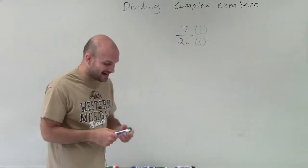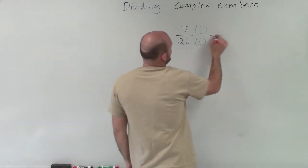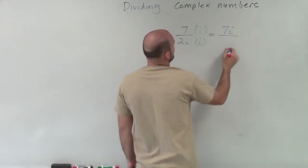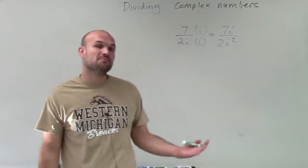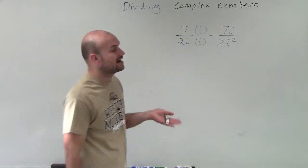So if I'm going to multiply by i on the top and bottom, I'll have 7i divided by 2i squared. Remember what we've talked about when multiplying: i times i is i squared.